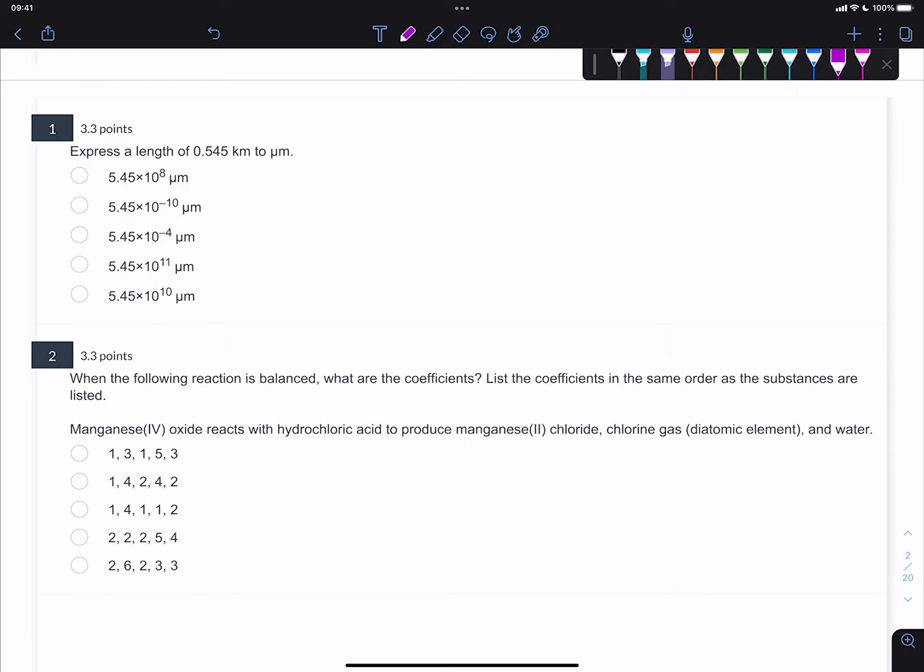Here is some help for the first test at Virginia Tech. This first question says express a length of 0.545 kilometers to micrometers. So you're going to be converting. This is going to test your knowledge of both metric system units as well as dimensional analysis.